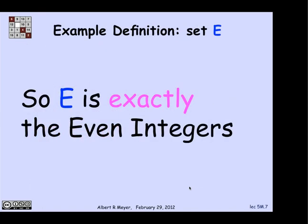What we can conclude from this is that E is exactly the even integers because there's nothing else there except those ones that were built up in the way indicated.